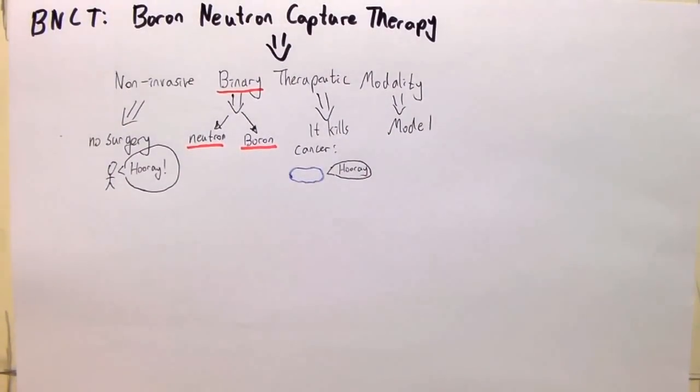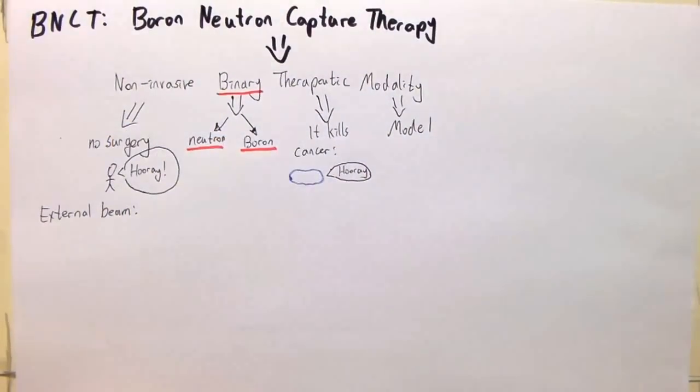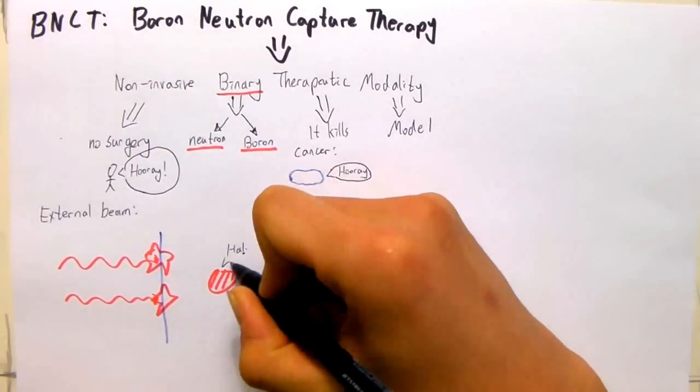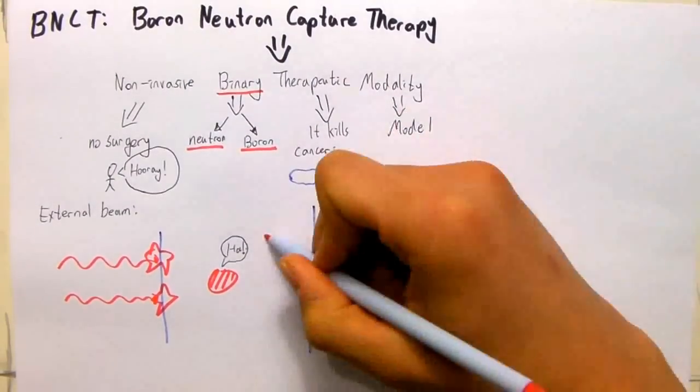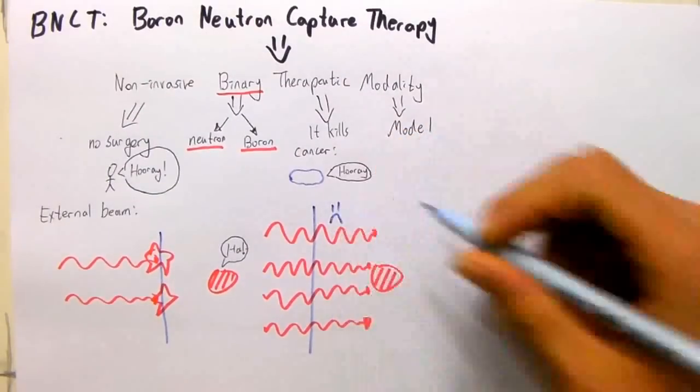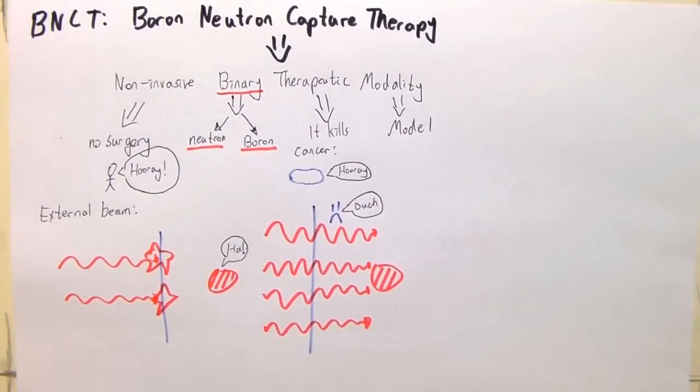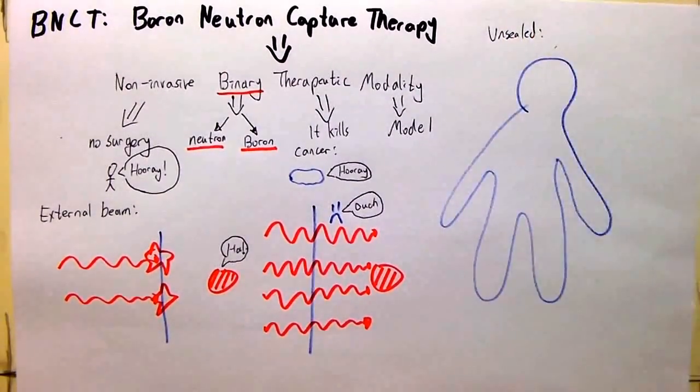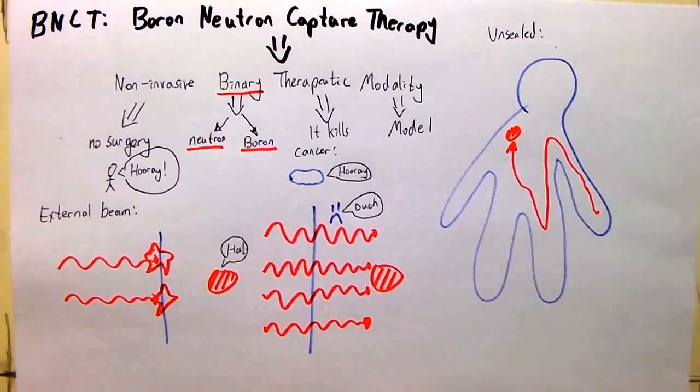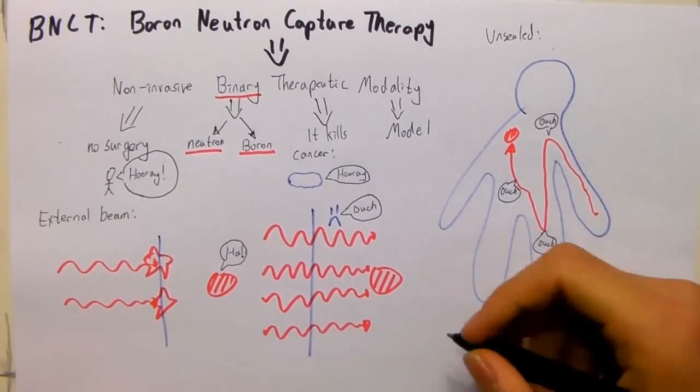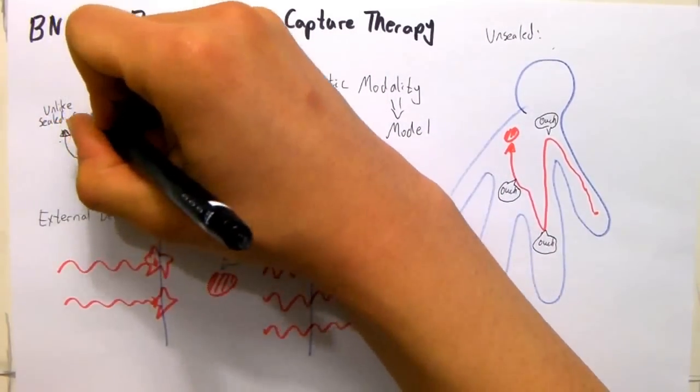Overall, BNCT is a binary therapy involving neutron radiation and boron-10. Unlike external beam therapy, it is not limited to the surface, nor does the radiation dose have to increase if the targeted tumor is not near the surface. Unlike sealed source, it is non-invasive and the radiation exposure can be controlled. The biological compound injected is initially non-radioactive and safe unlike unsealed radiotherapy.